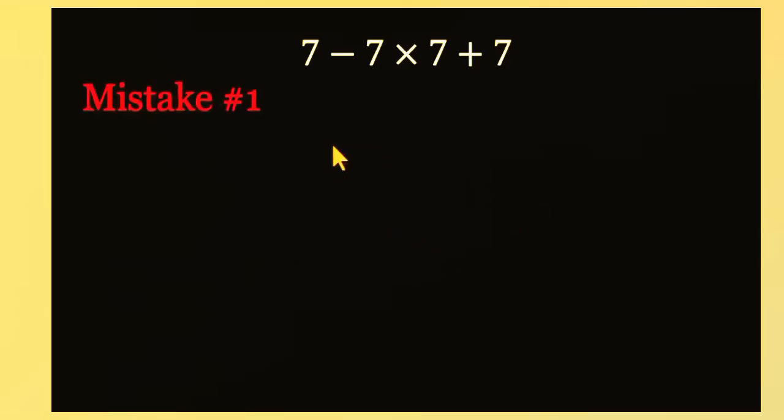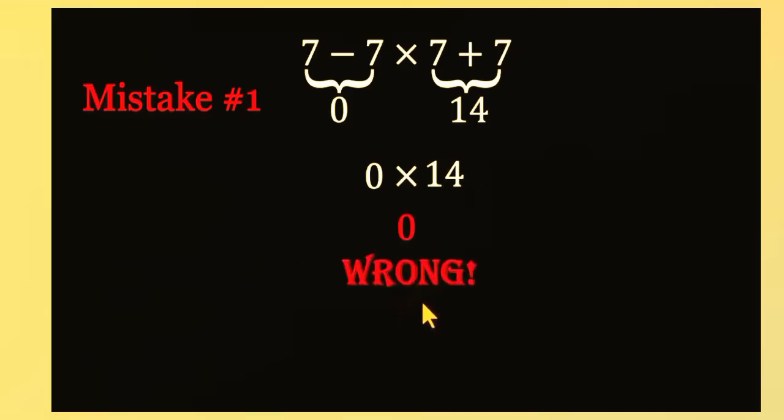First mistake. Some people group the 7s and force parentheses where they don't belong. They do 7 minus 7, which is 0, and 7 plus 7, which is 14. Then they multiply those results together. 0 times 14, and say that's 0. Quick and confident, but totally wrong.